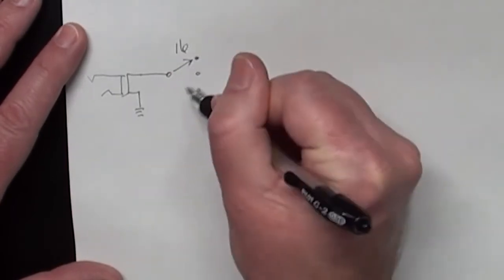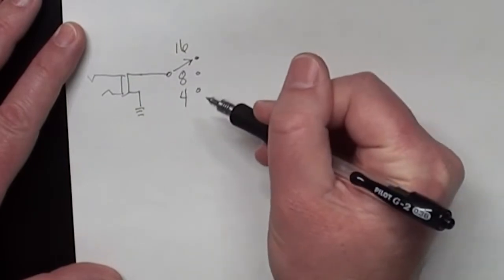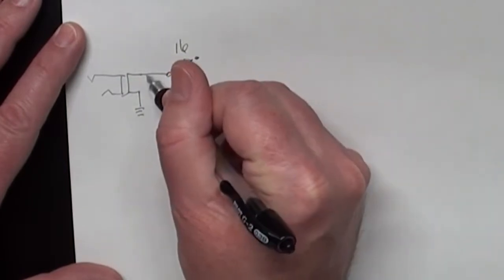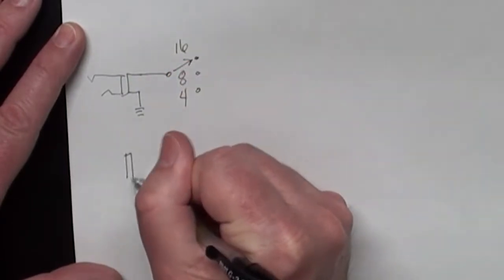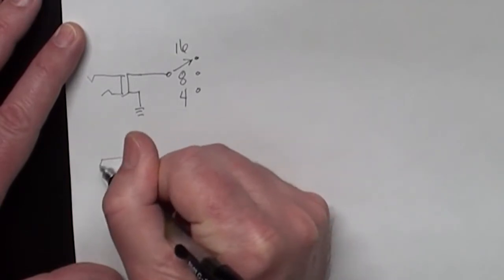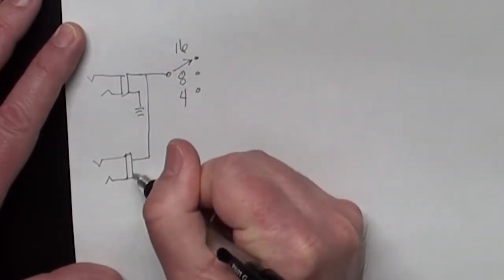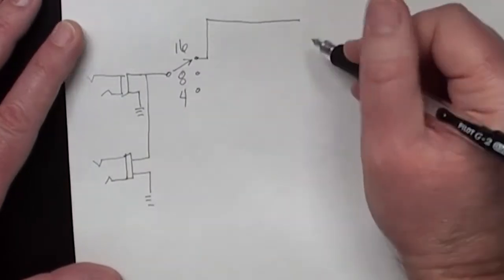Tapped off of here is going to be another jack. This is the jack that goes out to the BNC connector for the scope.